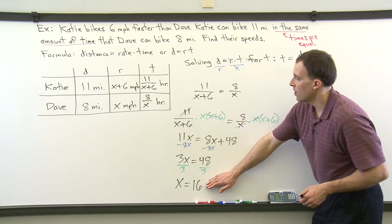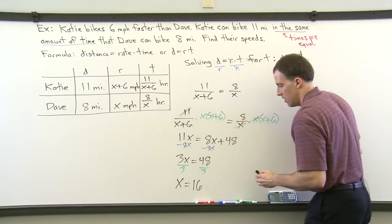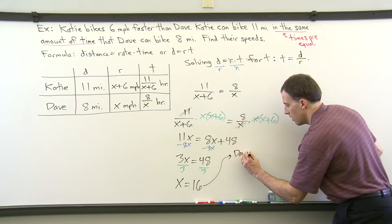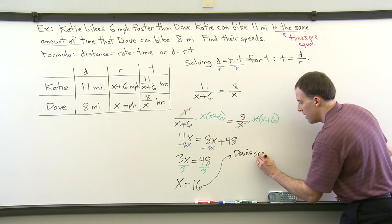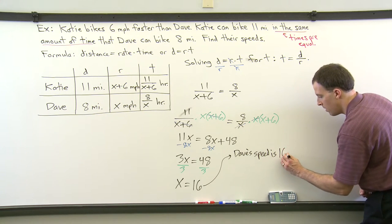So 16, consulting our table here, is 16 miles per hour. That's Dave's rate. So therefore, we've got Dave's speed. Speed and rate mean the same thing. So Dave's speed is 16 miles per hour.